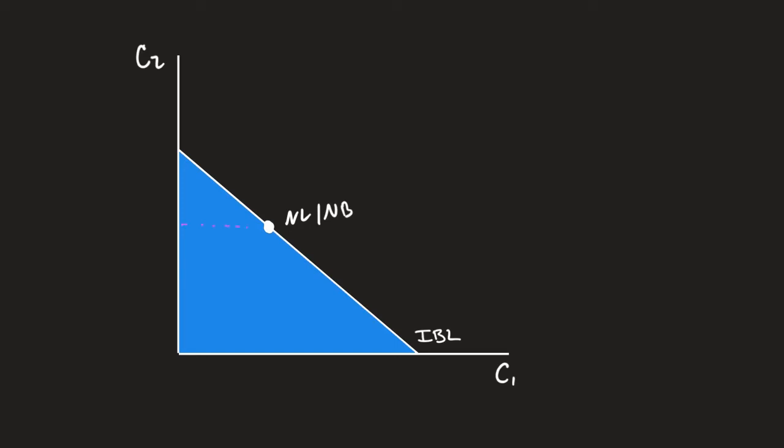We've talked about this a little bit in a previous video. But the no lending, no borrowing point tells me that's when I'm consuming my current resources in the current period and my future resources in the future period. At that point, you're not impacted by the real interest rate.